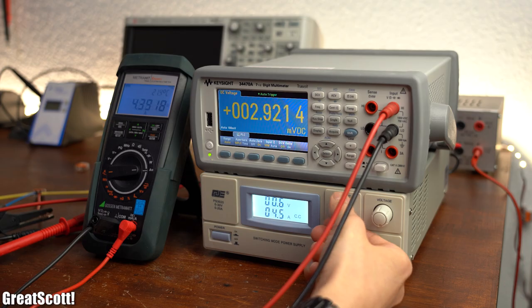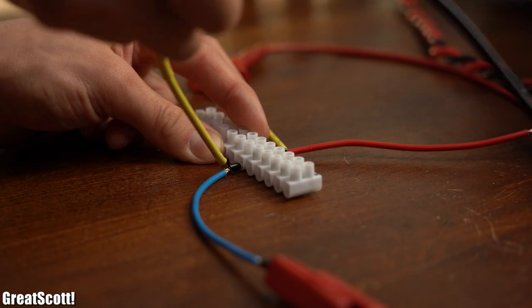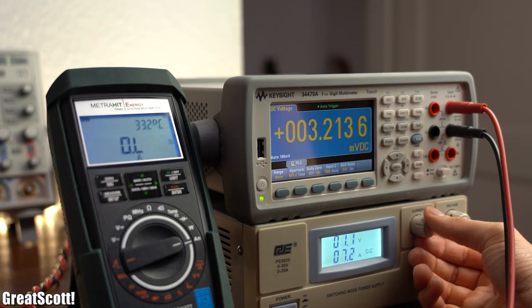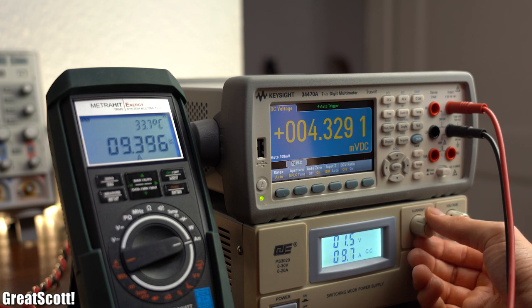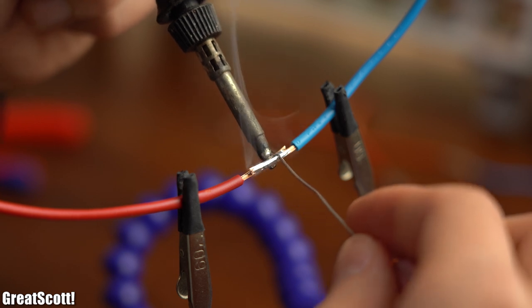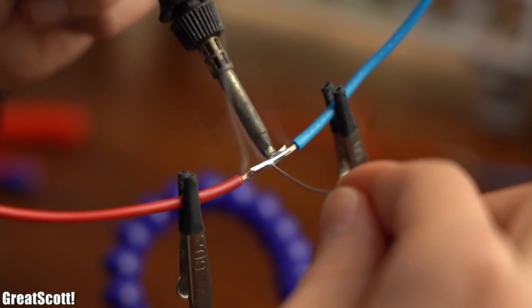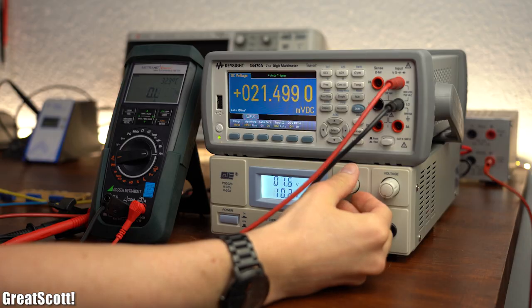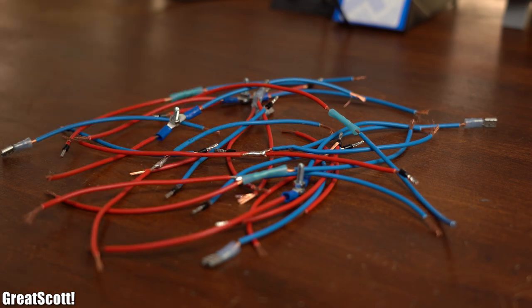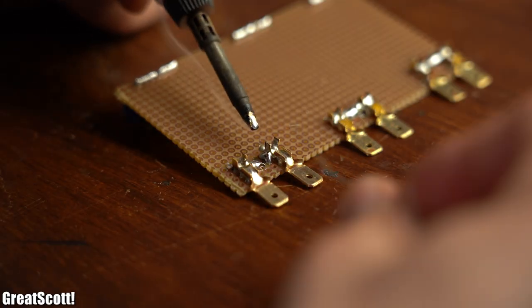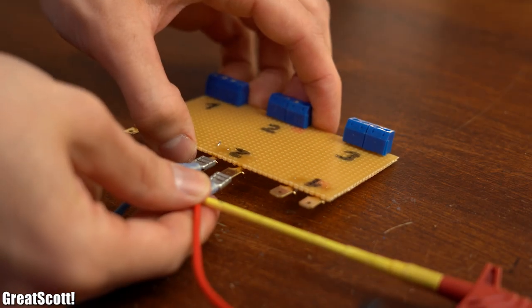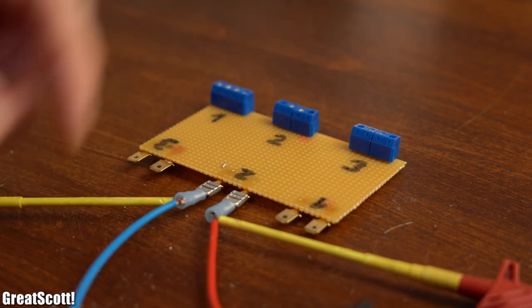And with the explanation out of the way, I started the experiment, which pretty much had me curious all the way through because I actually had no idea which connector or connection would be the best, except maybe the solder connection, since there we are basically fusing two metals together with the help of another metal. Now taking all the measurements took me around 3 hours in total, because I actually used 3 different wire pairs and also 3 connectors of the same type for each measurement, so that I can later calculate a more reliable average value.